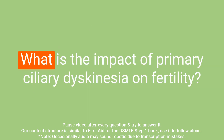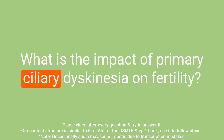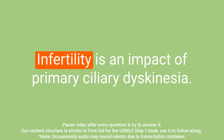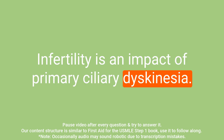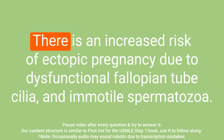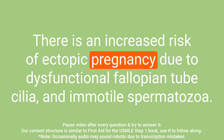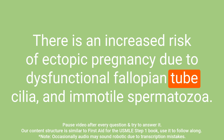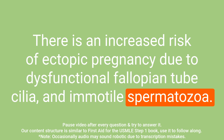Question: What is the impact of primary ciliary dyskinesia on fertility? Answer: Infertility is an impact of primary ciliary dyskinesia. There is an increased risk of ectopic pregnancy due to dysfunctional fallopian tube cilia, and immotile spermatozoa.